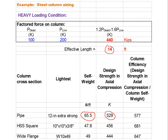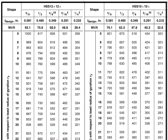Now we're going to look for the square tube. Again, we're at an effective length of 14 feet and we're looking for 440 kips. We find sections that work as we scan across the table.